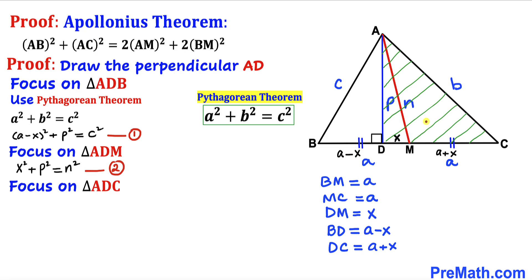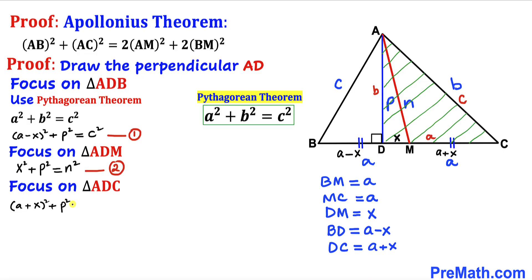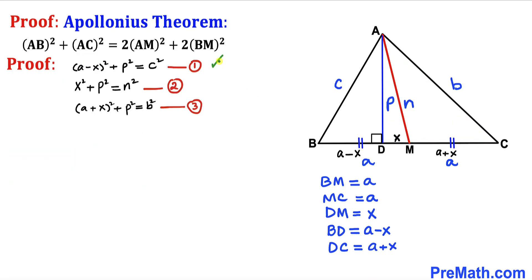Now let's focus on right triangle ADC and apply the Pythagorean theorem once more. Here, A is (a + x), B is p, and C is b. So we get: (a + x)² + p² = b². Let's call this Equation 3. We now have a system of three equations.